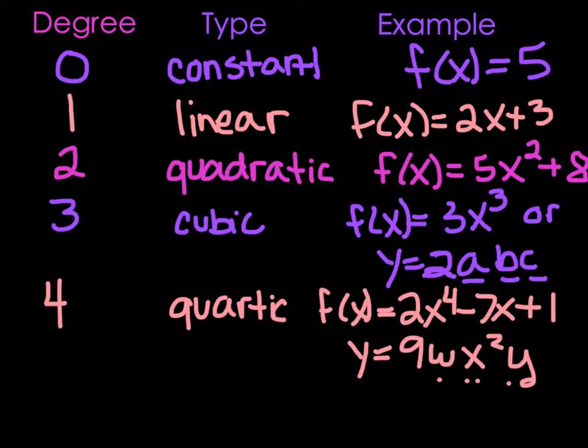Anything after degree 4, we don't have a special name. We just call it 5th degree, 6th degree, 7th degree, and so on.